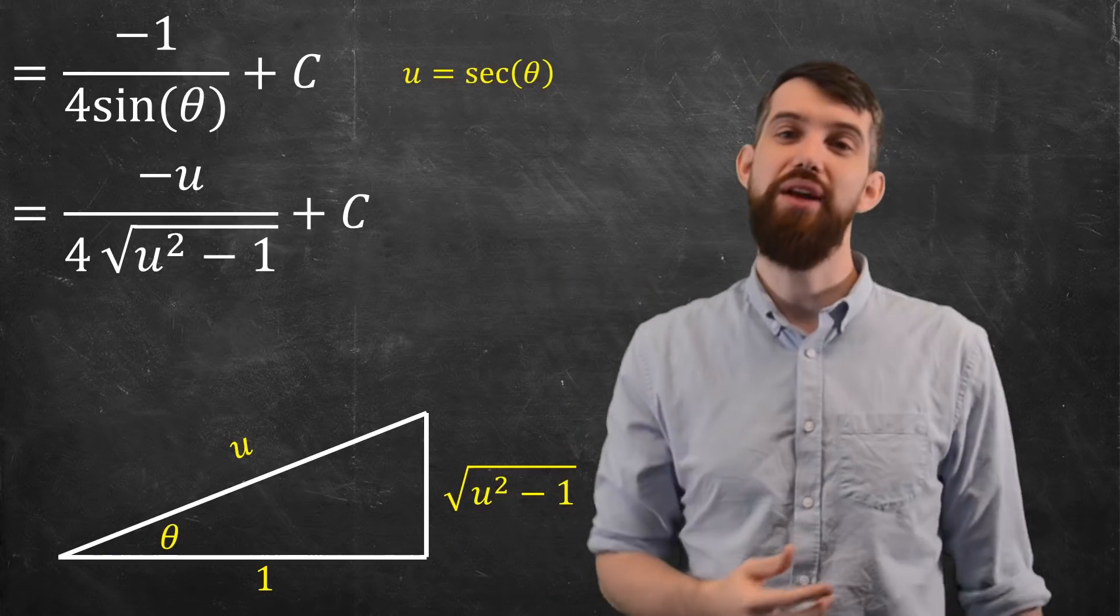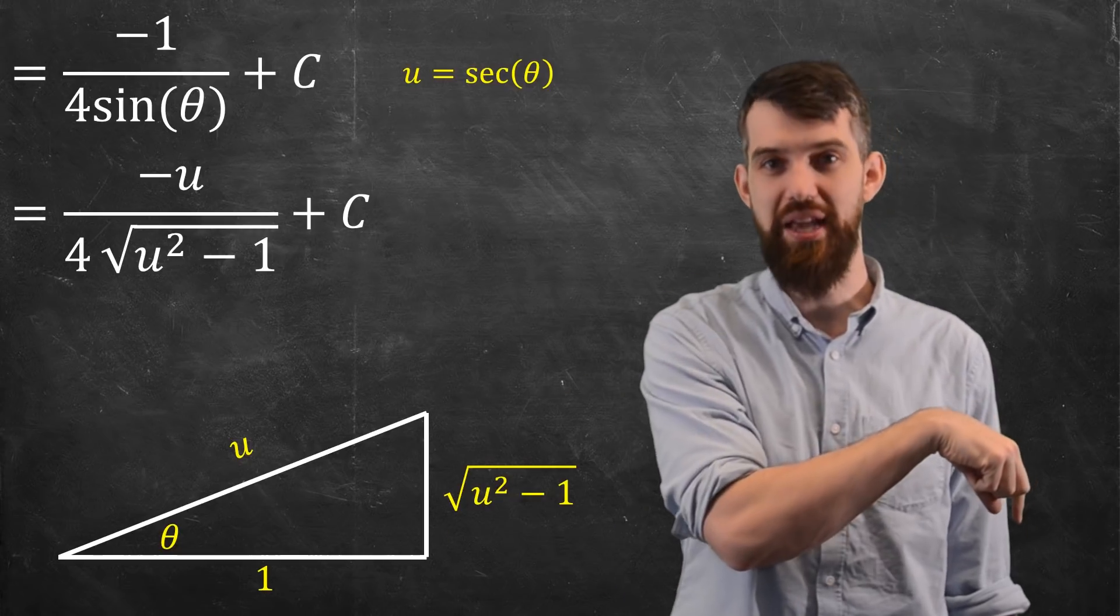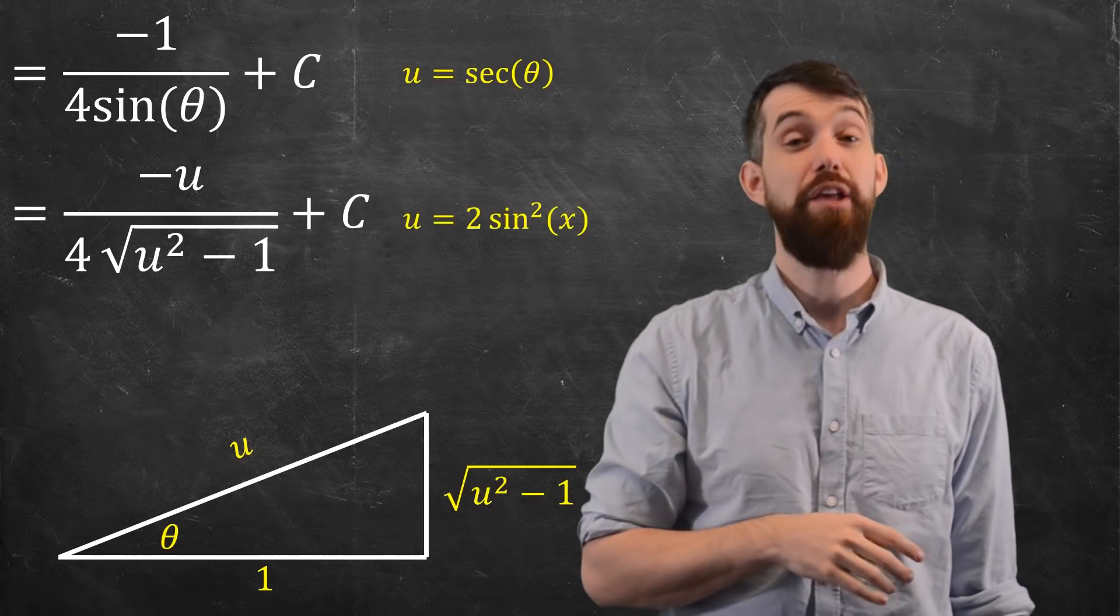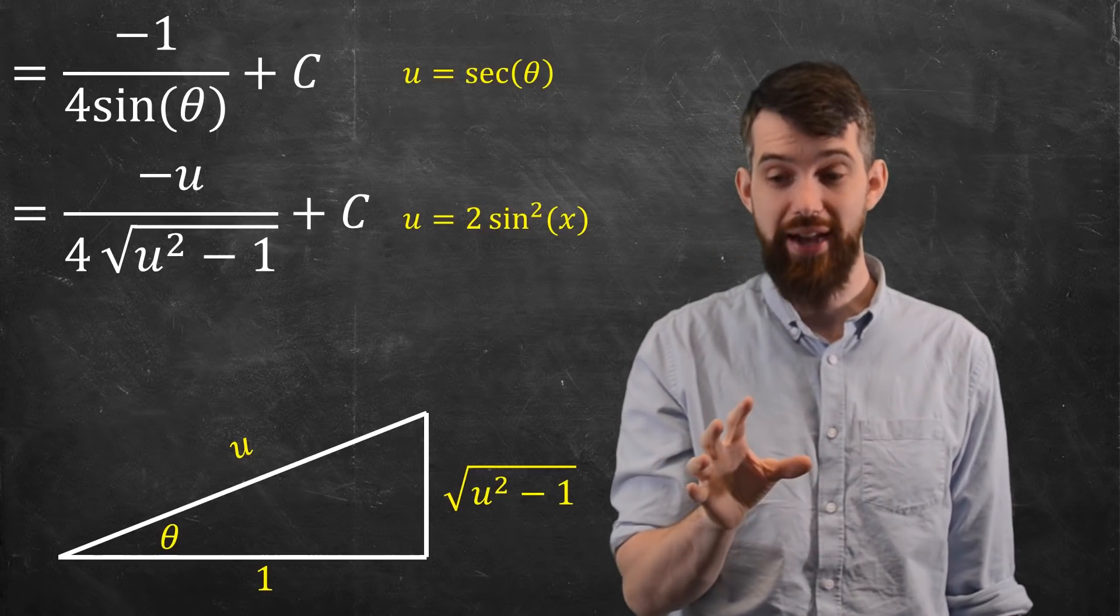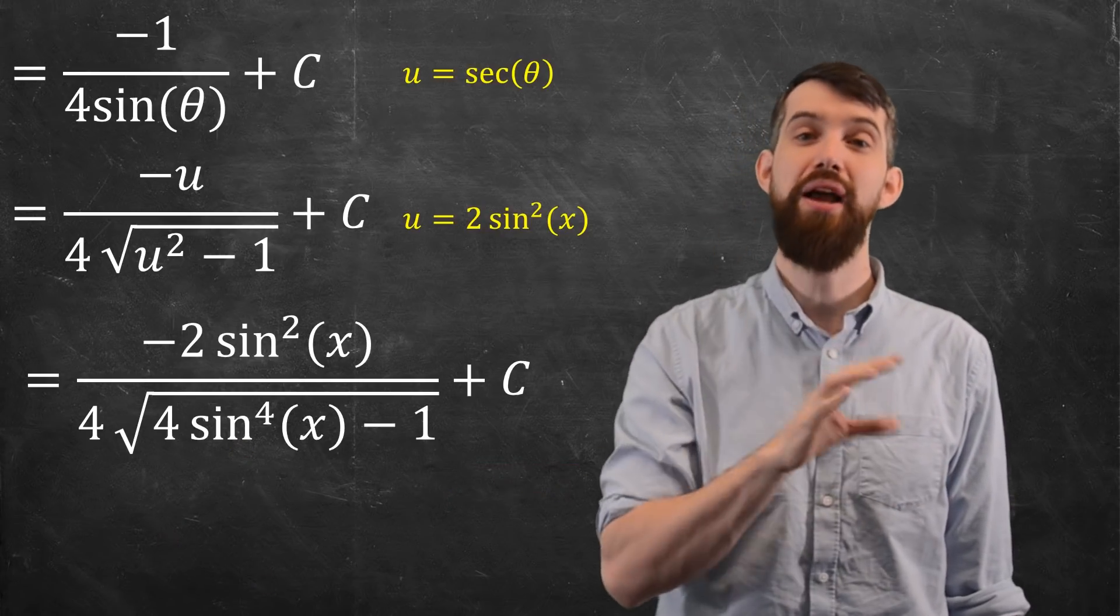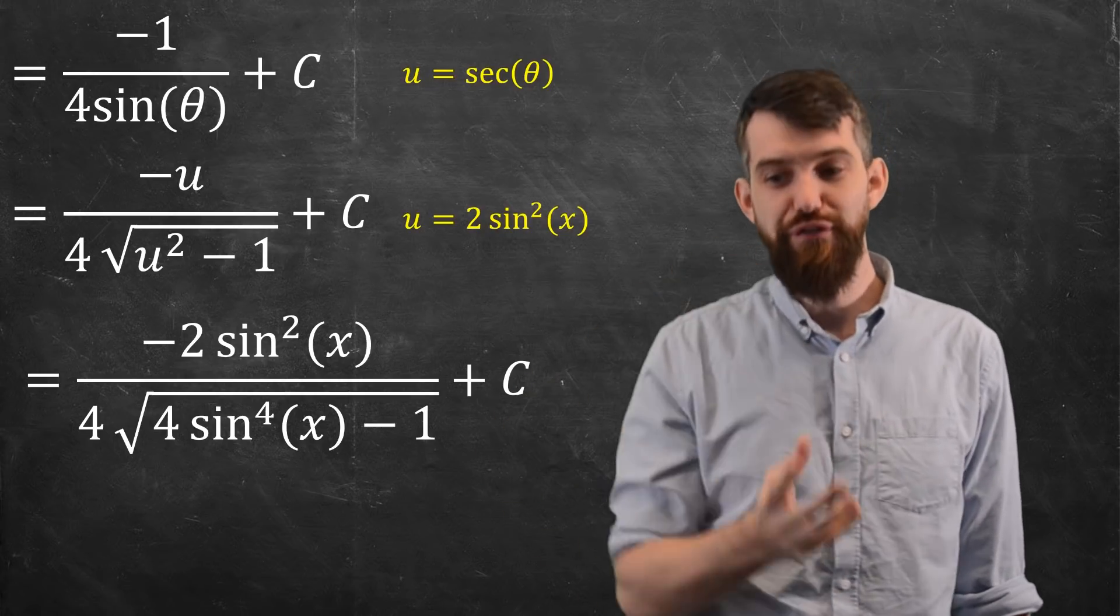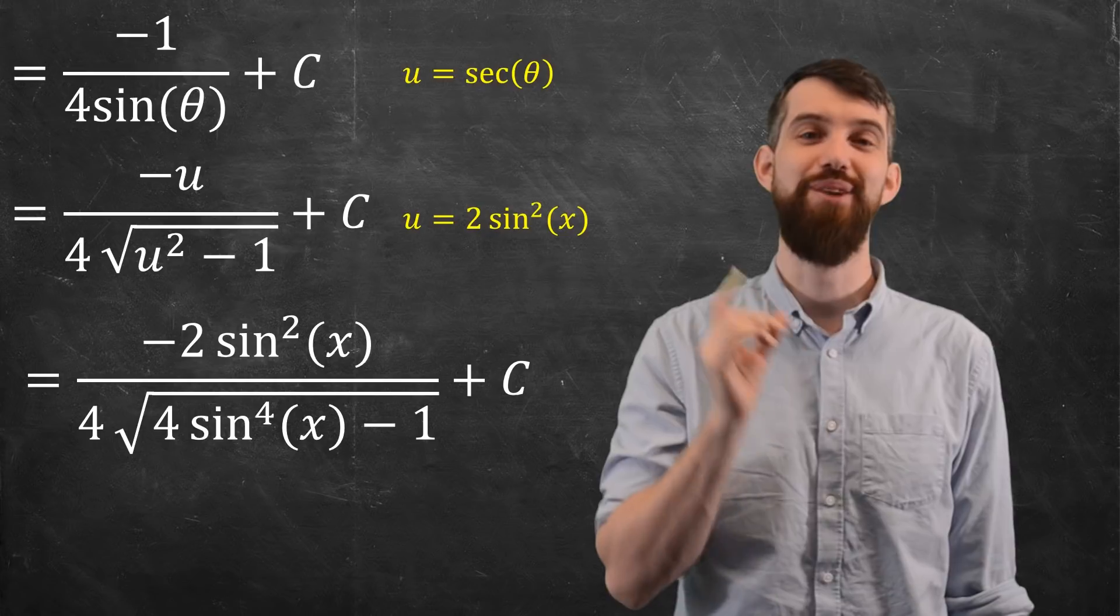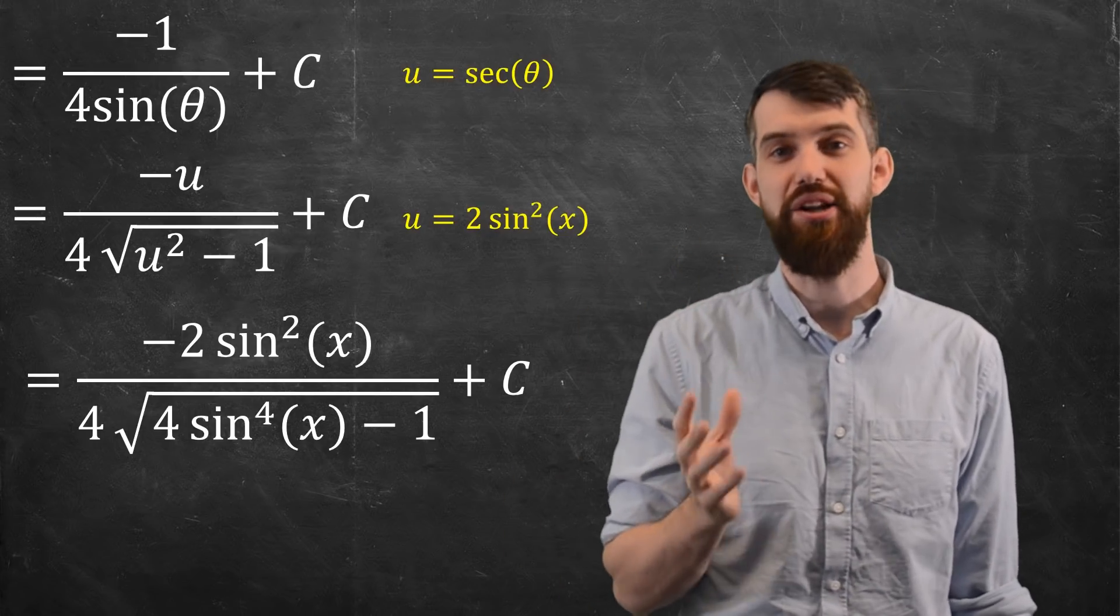And I am still not done, because even though I've done the trigonometric, if you recall, all the way back at the beginning, we did an initial U substitution that related U and x. It was U is this twice sine squared of x. I plug that in, what do I get? Minus two sine squared of x, all divided by four, square root of four sine to the fourth of x minus one plus C. That is a mouthful, but it is indeed our final answer.